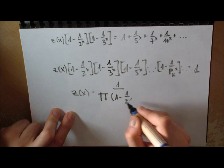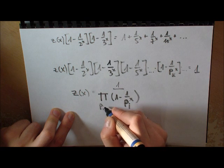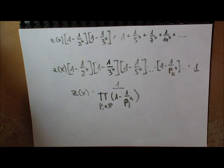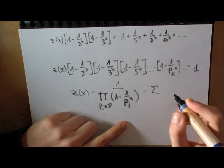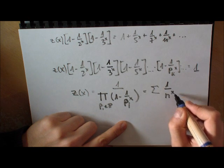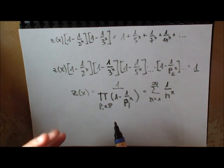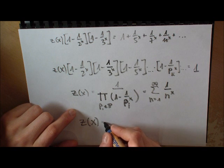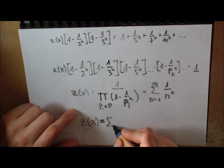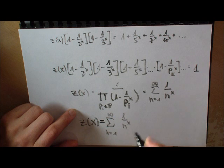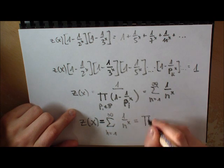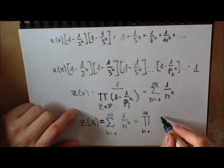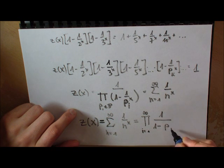Z(x) equals the product from i equals 1 to infinity of 1 minus 1 over pi_i to the x, where pi_i are just the prime numbers. Then this is a true statement that the zeta function, which was actually equal to the sum from n equals 1 to infinity of 1 over n to the x, can be represented. This zeta function can be written in two ways: one is writing it down as a sum, and the other is writing it down as a product. It can be written as the product from i equals 1 to infinity of 1 over 1 minus pi_i to the minus x.